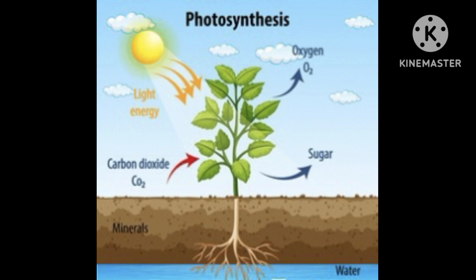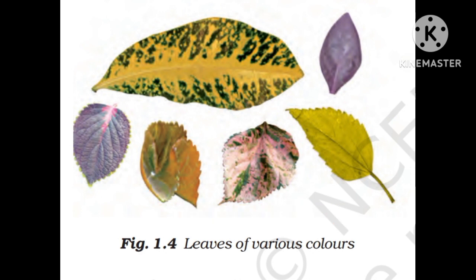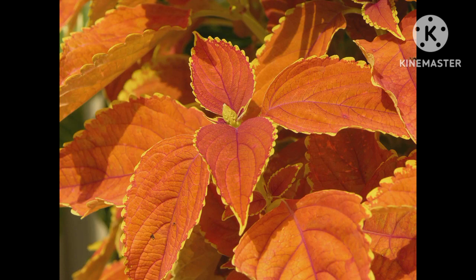Plants make food, and besides that, oxygen is essential for survival. During photosynthesis, the leaf absorbs carbon dioxide from the air and releases oxygen. Carbohydrates are made of carbon, hydrogen and oxygen, and these are used to synthesize other components of food such as proteins and fats.